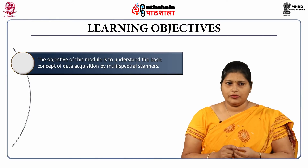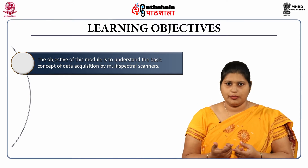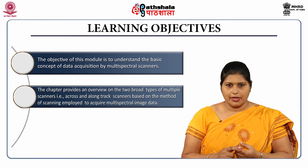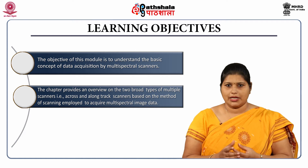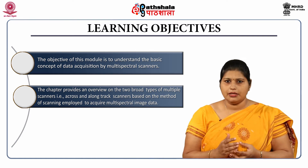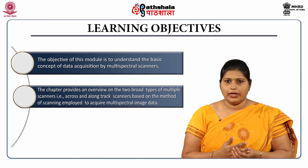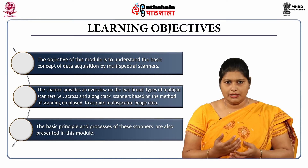The learning objectives of this module are to understand the basic concept of data acquisition by multispectral scanners. This chapter provides an overview of the two broad types of multispectral scanners — that is, across-track scanners and along-track scanners — based on the method of scanning employed to acquire multispectral image data. The basic principles and processes of these scanners have been presented in this module.